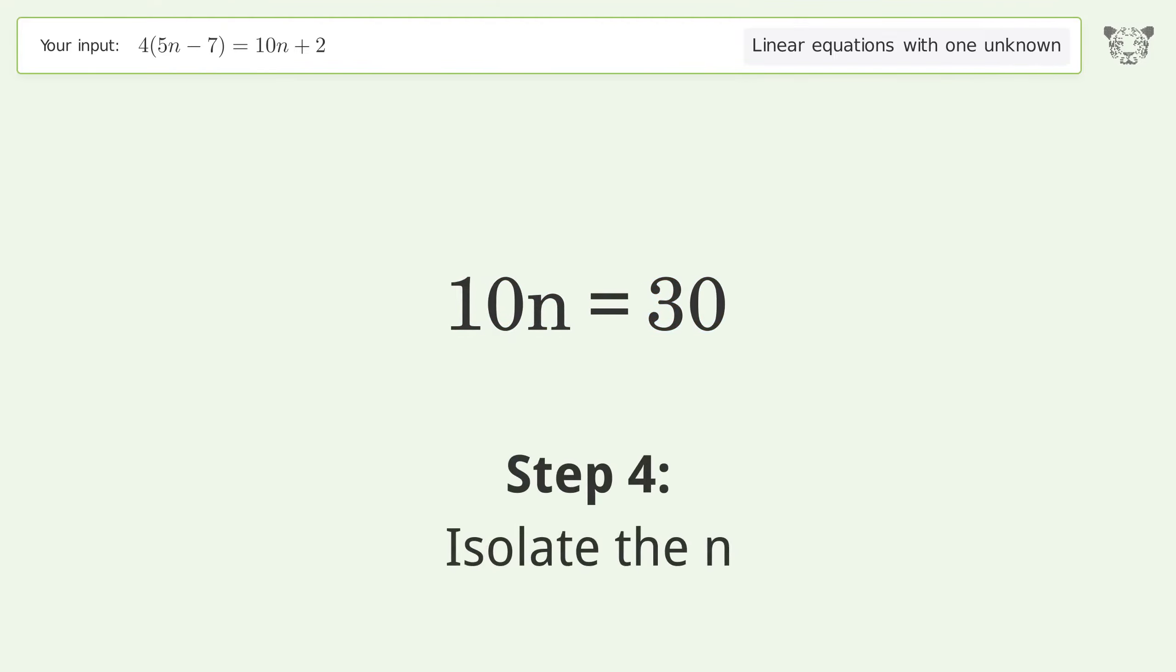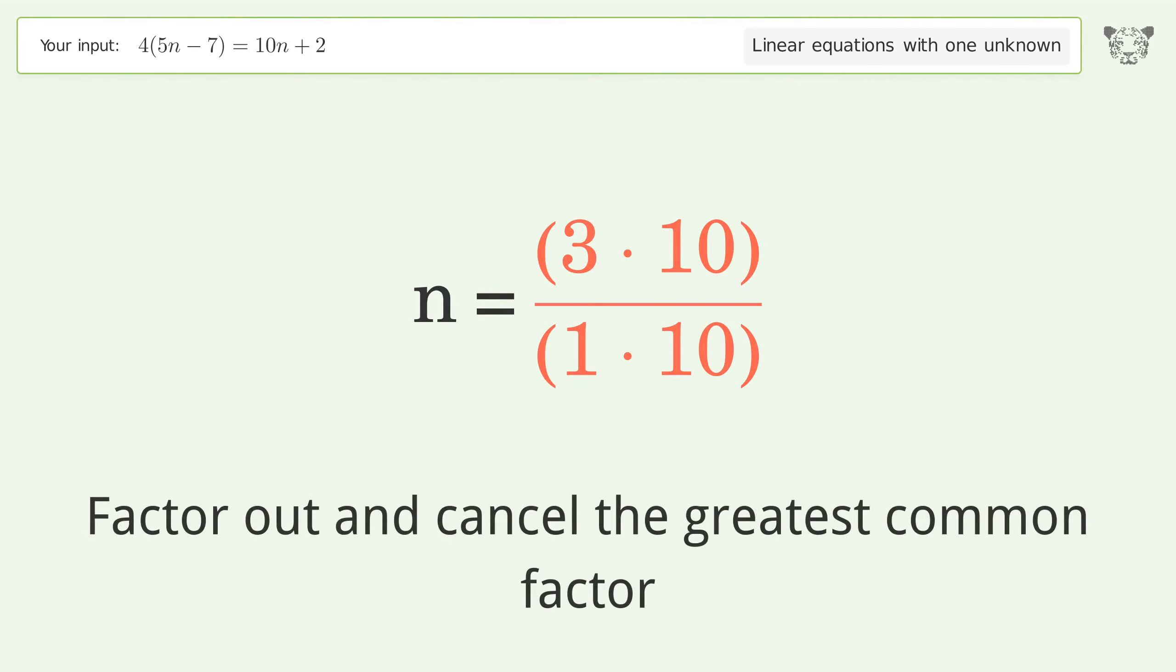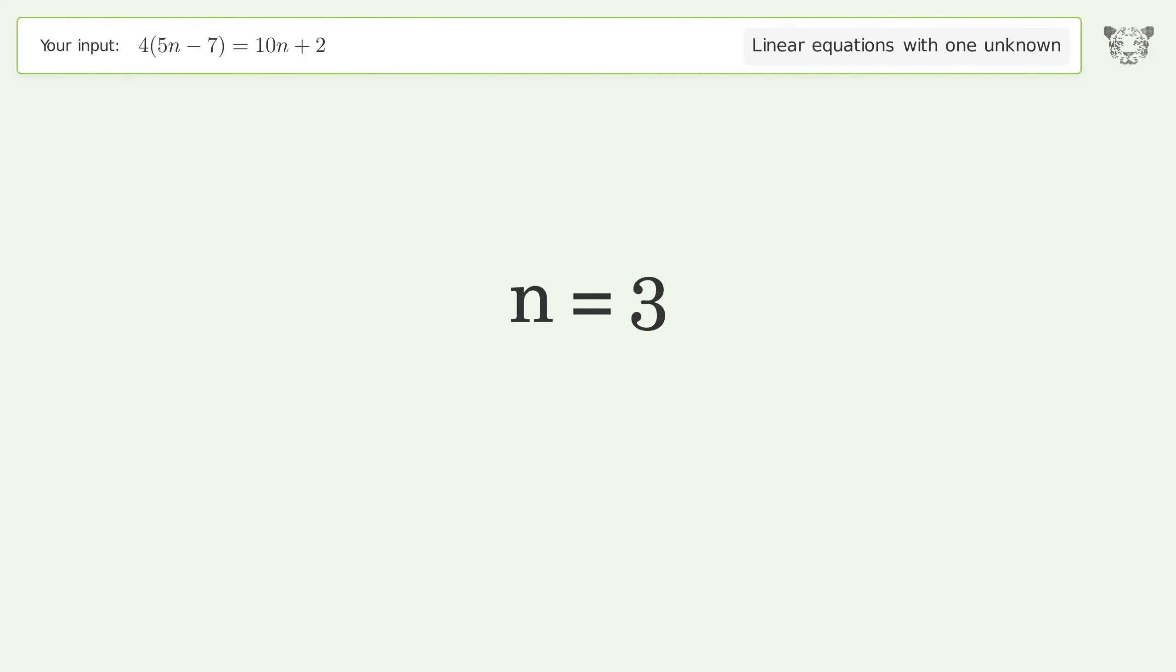Isolate the n. Divide both sides by 10. Simplify the fraction. Find the greatest common factor of the numerator and denominator. Factor out and cancel the greatest common factor. And so the final result is n equals 3.